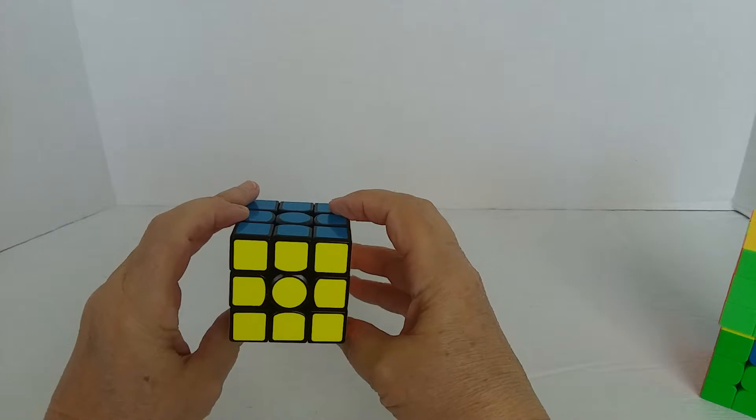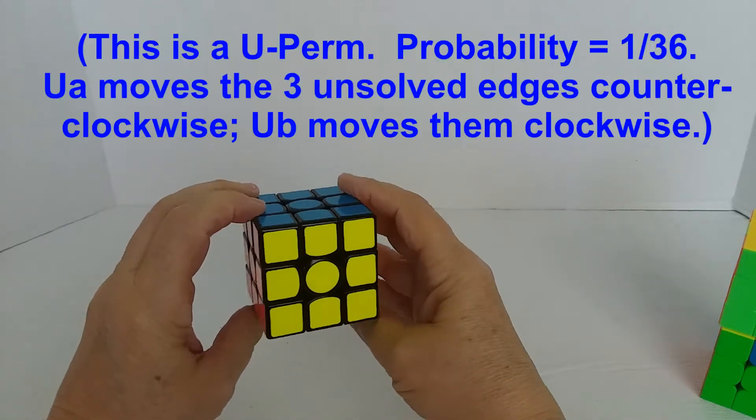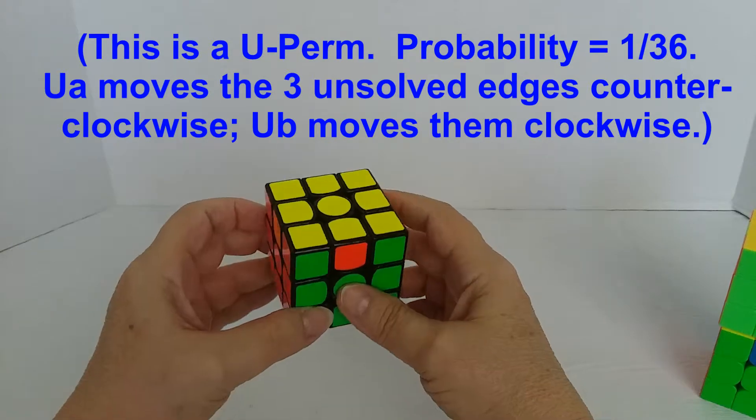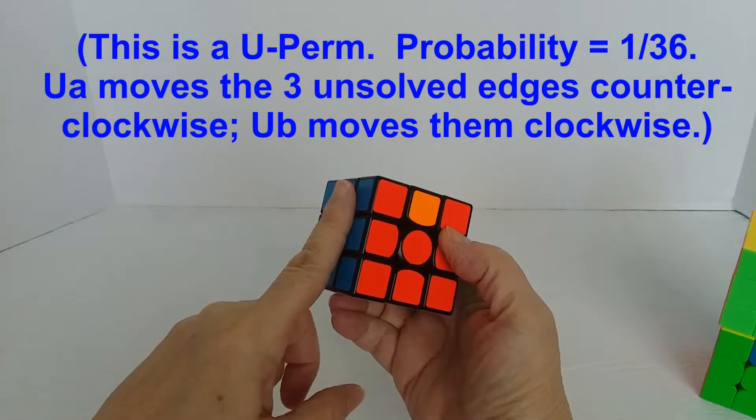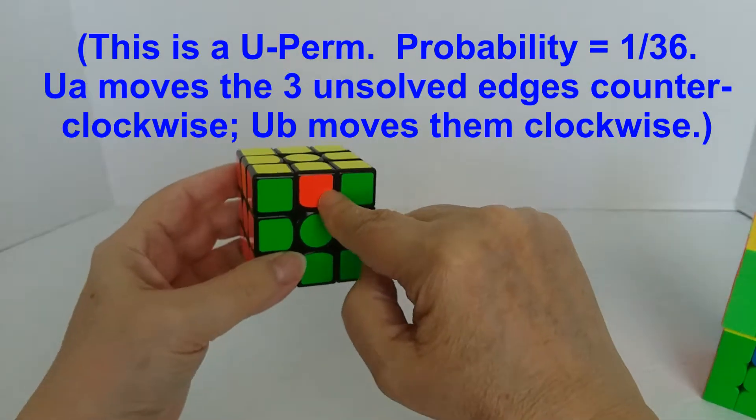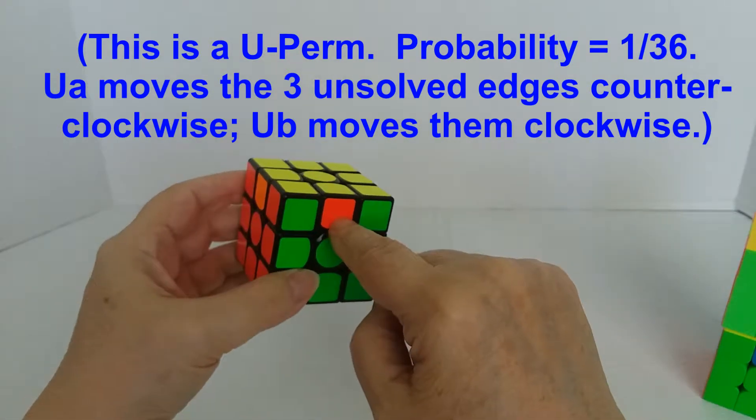The way I learned to do this is not the most efficient way, but it was easy to remember and it works for me. So I position the cube with the solved side at the back. I look at this sticker in the front, in the middle, to see what color it is.